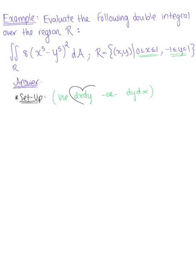So we'll go with our first one, we'll use dx dy, so I'm going to rewrite this integral. If we're using the order dx dy, the y bounds are on the outside, negative 1 to 1, x bounds are on the inside, 0 to 1, 8 multiplied by x to the 5th minus y to the 5th squared dx dy.